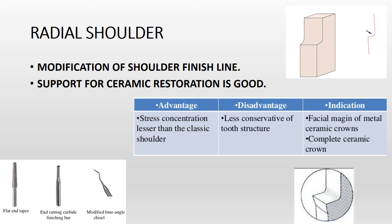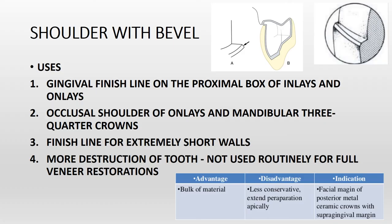The radial shoulder is a modification of the shoulder finish line. It provides good support for ceramic restorations, but the shoulder remains the primary choice for all-ceramics. The angulation is not sharp — it is rounded off like a radius of a circle. This prevents the coronal fractures seen with the classic shoulder. Advantages: lesser stress concentration than classic shoulder. Disadvantage: less conservative. Indication: same as shoulder. Burs used: flat-end tapered, end-cutting carbide finishing bur, or modified bin-angle chisel.